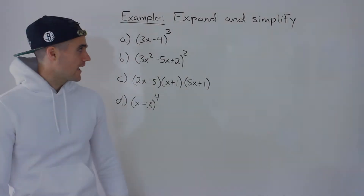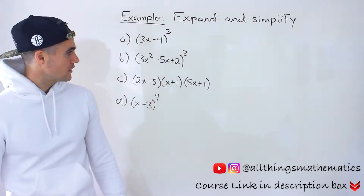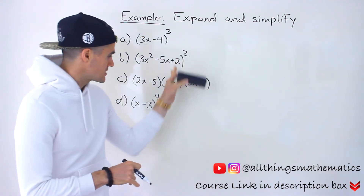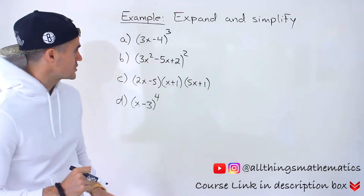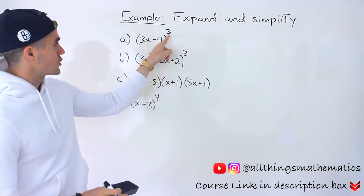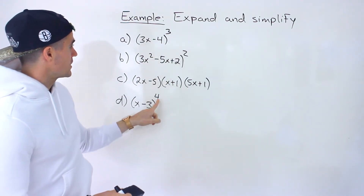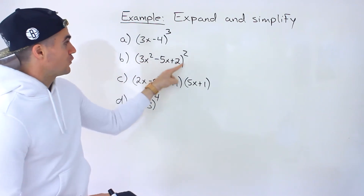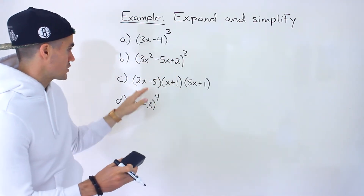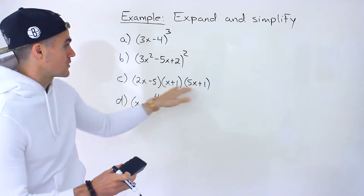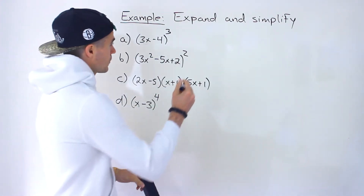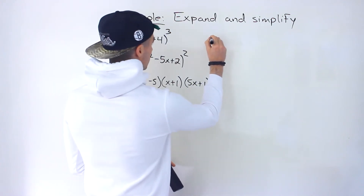Welcome back everyone. Patrick here, moving on to another question dealing with expanding and simplifying. We have to expand and simplify four expressions. These are unique — we have larger exponents like exponent 3 and exponent 4, a full quadratic to the power of 2, and three binomials multiplying by each other. Just some different random scenarios that you might run into.